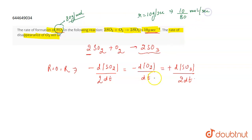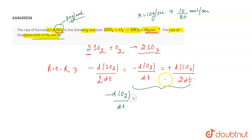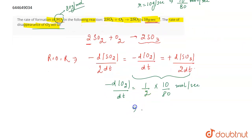We can equate the expressions to find the disappearance of O2. So −d[O2]/dt = (1/2) × (10/80) moles per second. But we need the answer in grams per second, just as SO3 was given in grams per second. So we multiply by the molar mass of O2, which is 32 grams per mole: (1/2) × (10/80) × 32.